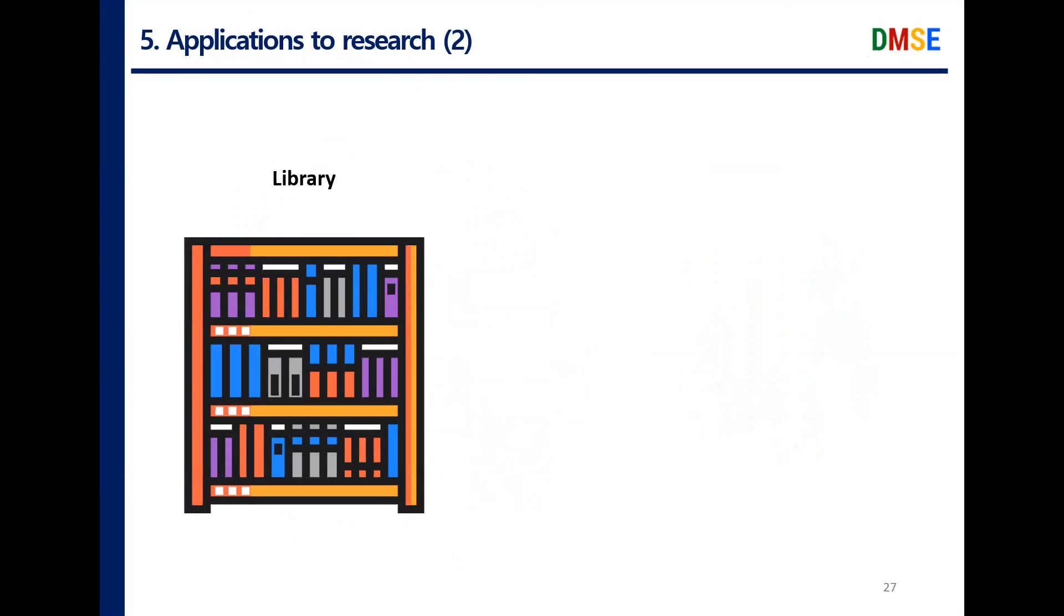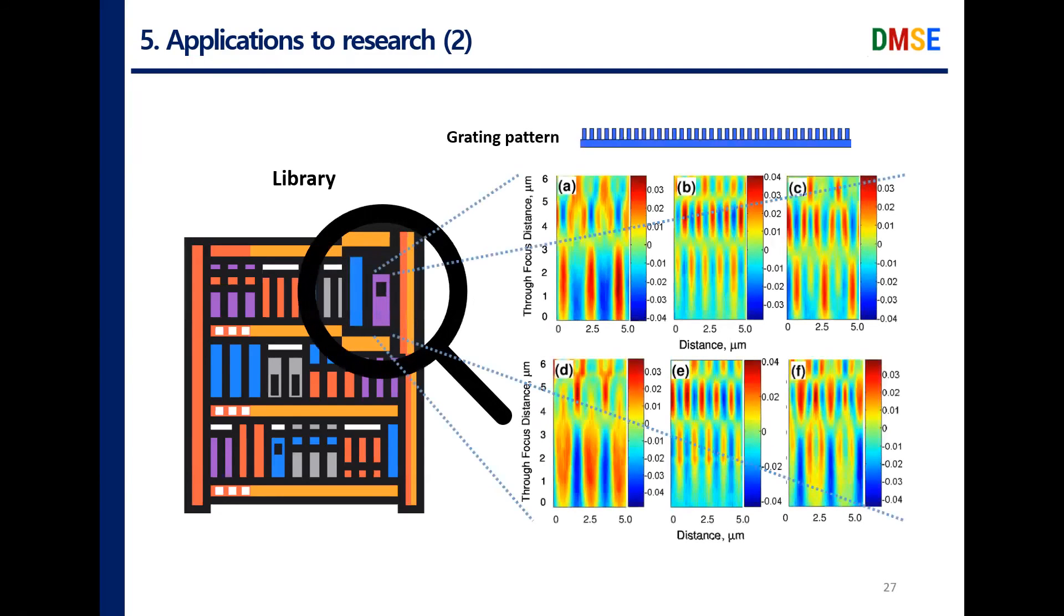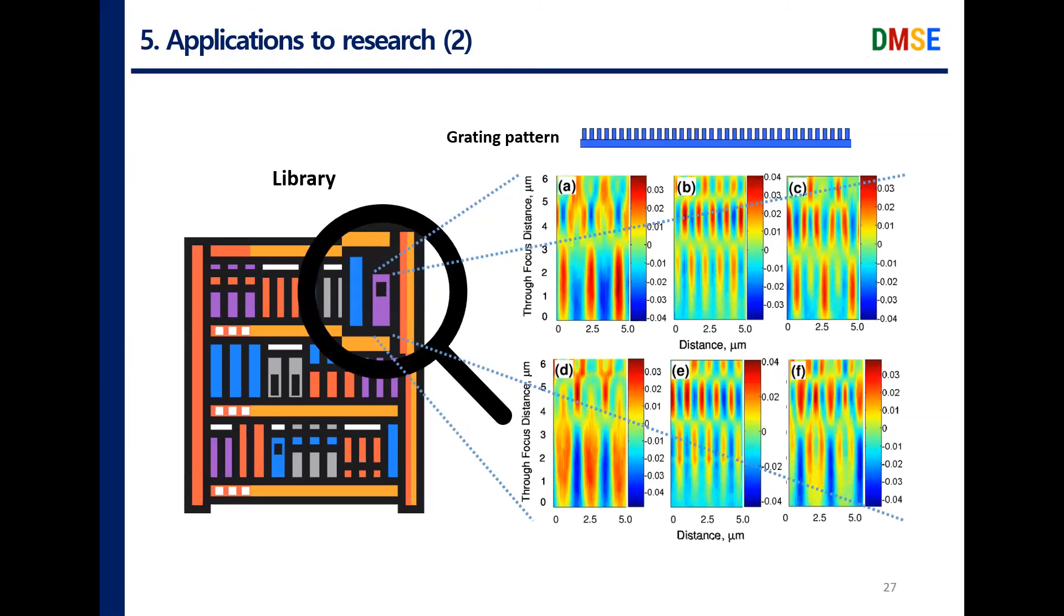For example, a reference may be about a grating pattern. The different images will be coming from the differences in line width or pitch. Furthermore, even a small defect can change the resulting TSOM image. This can be utilized in the front-end semiconductor process.